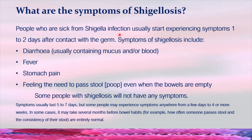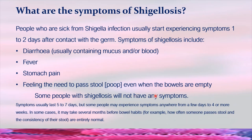So how would you recognize if you have contracted Shigellosis? People who are sick usually start experiencing symptoms one to two days after contact with the germ. Symptoms of Shigellosis include diarrhea — usually containing mucus and/or blood — fever, stomach pain, and most importantly, the feeling of needing to pass stool even when the bowels are empty. Note that some people with Shigellosis will not have any symptoms.